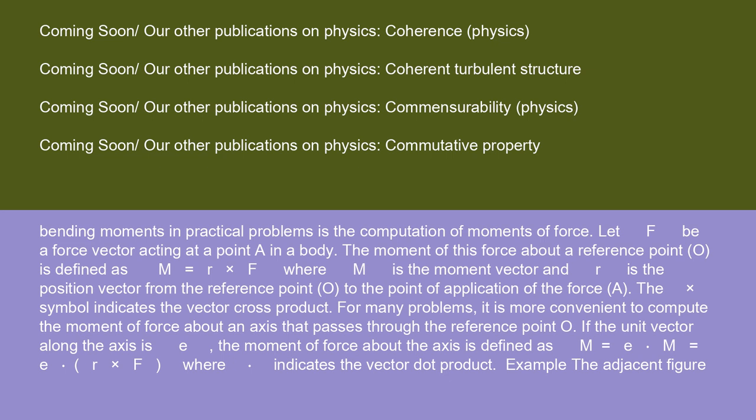For many problems, it is more convenient to compute the moment of force about an axis that passes through the reference point O. If the unit vector along the axis is e, the moment of force about the axis is defined as m = e · M = e · (r × F), where · indicates the vector dot product.